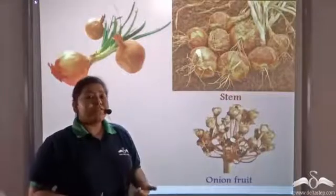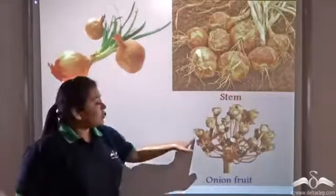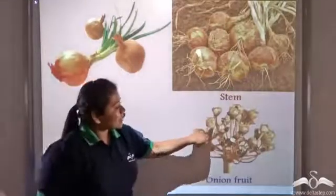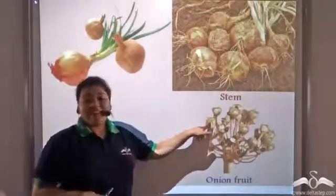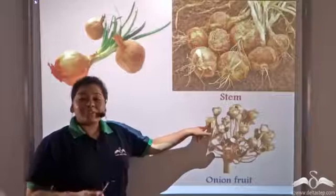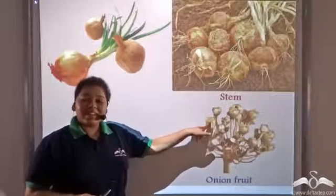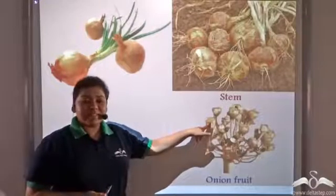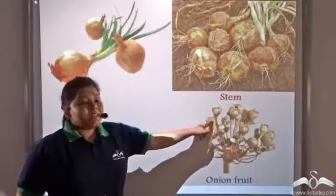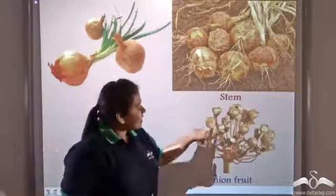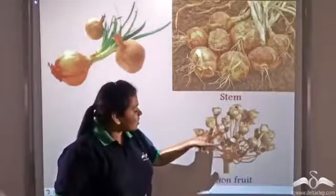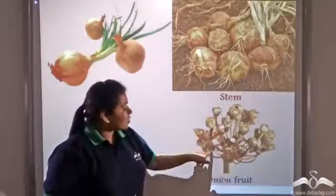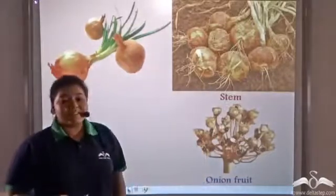Onion fruits actually look like this. We generally don't eat onion fruits, and onion fruits contain these black structures which are the seeds.